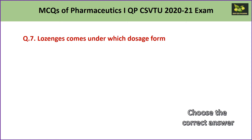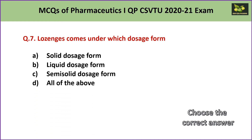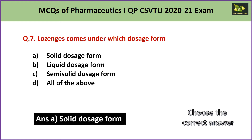Question number 7: Lozenges come under which dosage form? A. solid dosage form, B. liquid dosage form, C. semi-solid dosage form, or D. all of the above. The answer is A — solid dosage form — because lozenges are solid dosage forms specially used for dissolving or disintegrating slowly in the mouth. They may contain anesthetic, demulcent, or antiseptic and are used for medicating the mouth and throat.